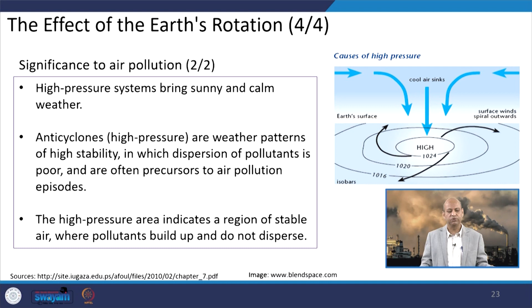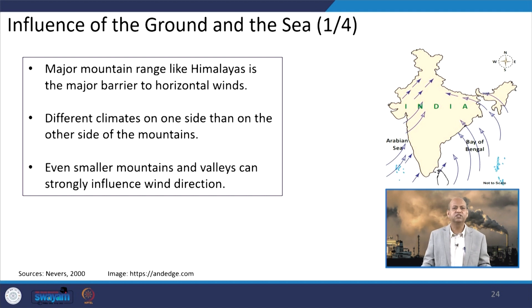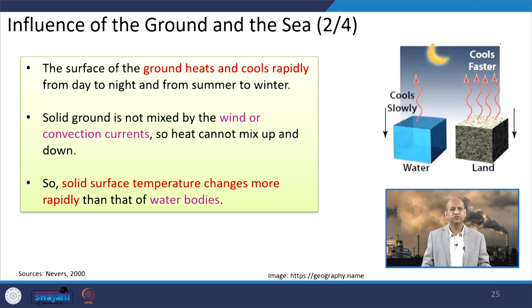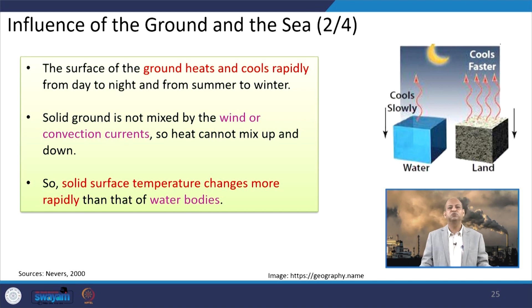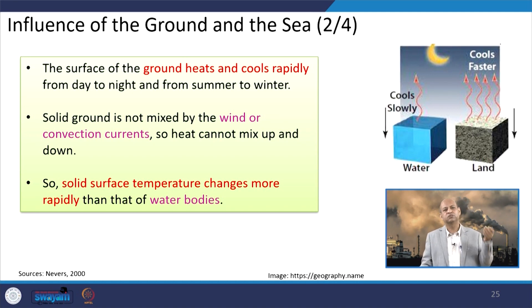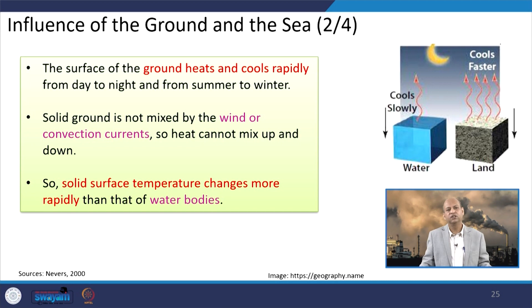Major mountain ranges like the Himalayas act as barriers to horizontal winds, causing different climates on each side. Even smaller mountains and valleys can strongly influence wind direction and circulation, and accordingly the dispersion of air pollution can be affected. The surface of the ground heats and cools rapidly from day to night and from summer to winter, but solid ground is not mixed by wind — only by convection currents — so solid surface temperature changes more rapidly than that of water bodies, which is why sea breeze and land breeze phenomena occur.